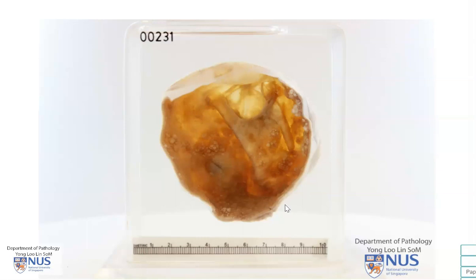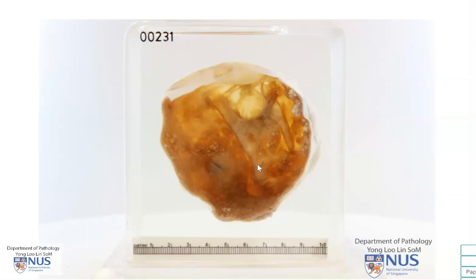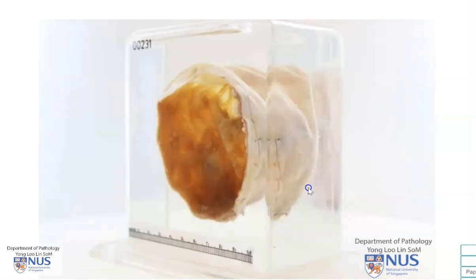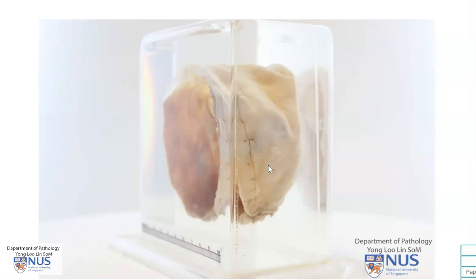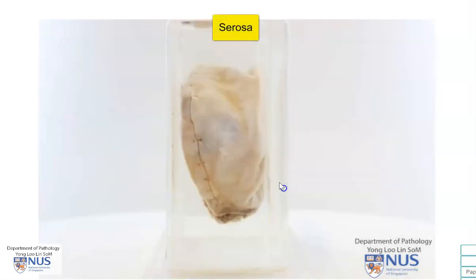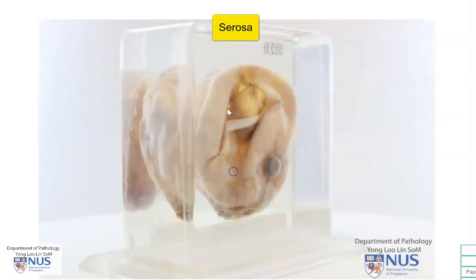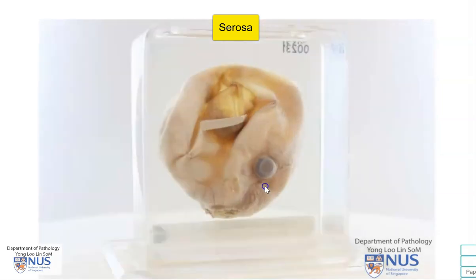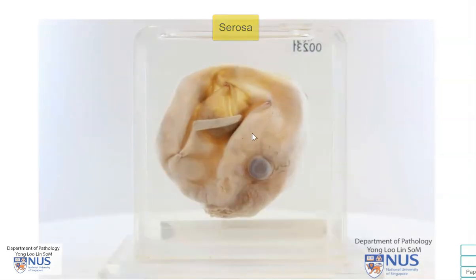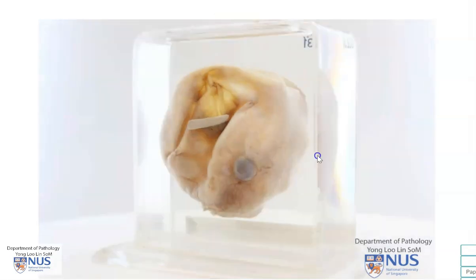Hello, we're looking at a pathology specimen of an enlarged cystic ovary, and what we're looking at here is the inner lining or the inner wall of the cyst. Let me just turn the specimen around. This is the capsular surface or the serosal surface, and I want you to observe that the serosal surface is actually very smooth. There is no evidence of any tumor deposits or any masses on the serosal surface.